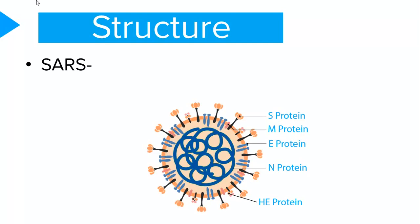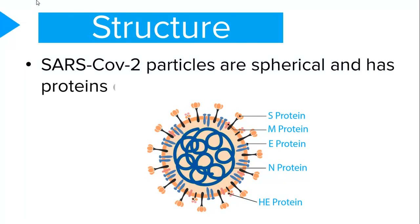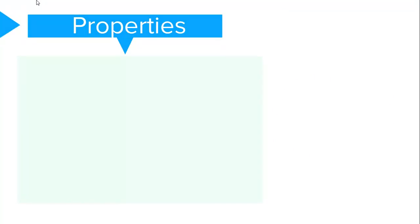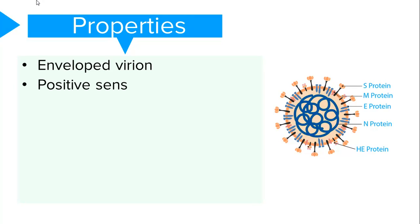Coronavirus virions or particles are spherical with surface proteins known as spikes. These viruses are pleomorphic enveloped particles, and the RNA in these viruses is of a positive sense which is single-stranded.